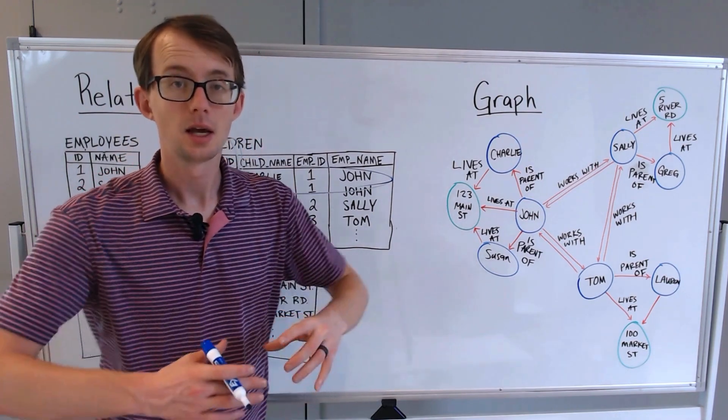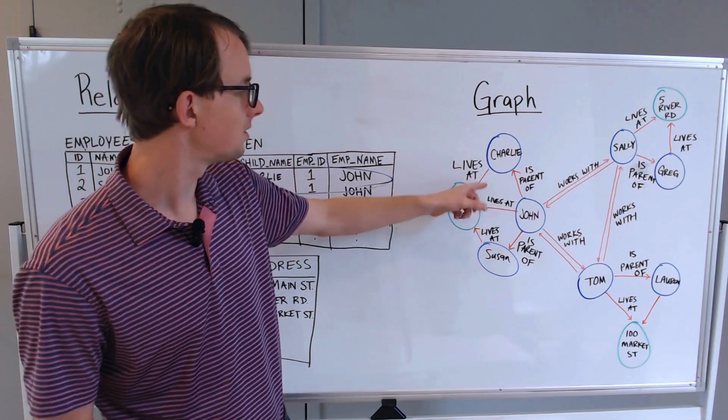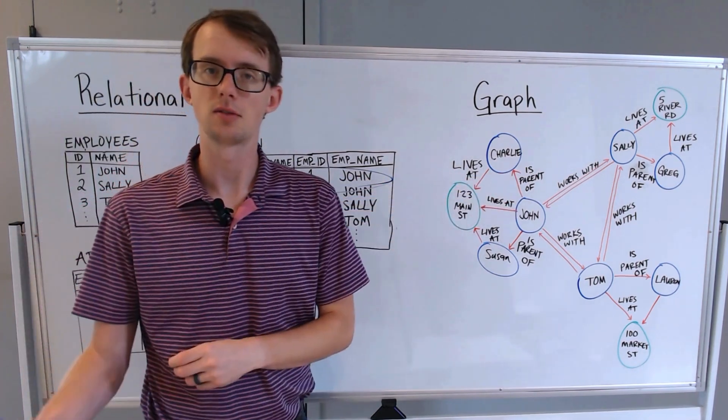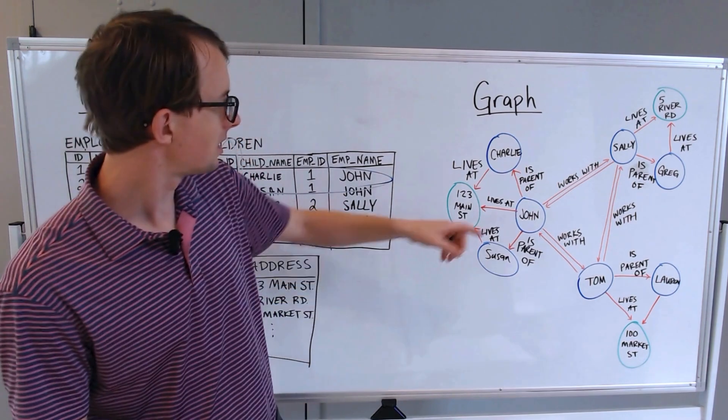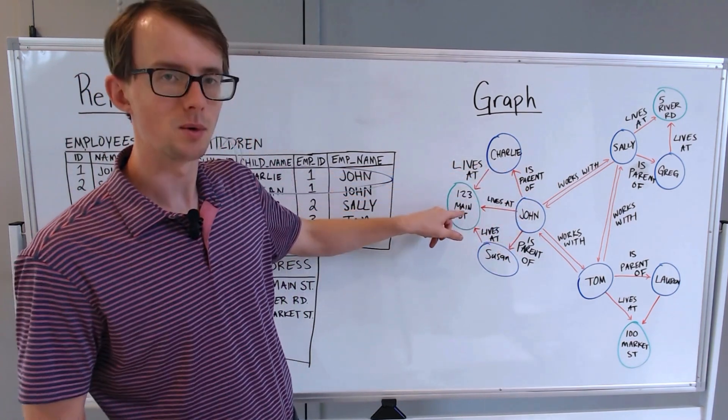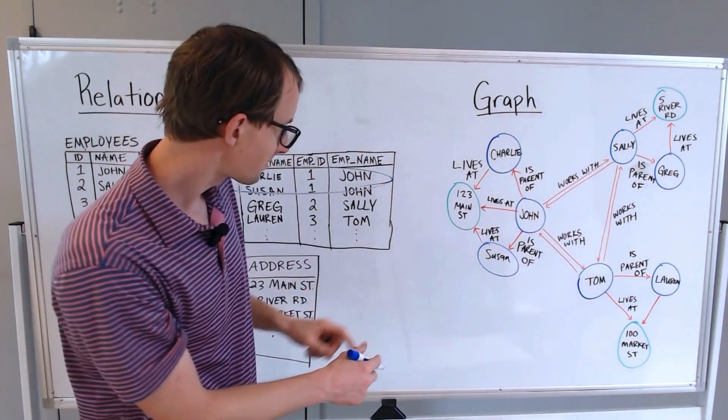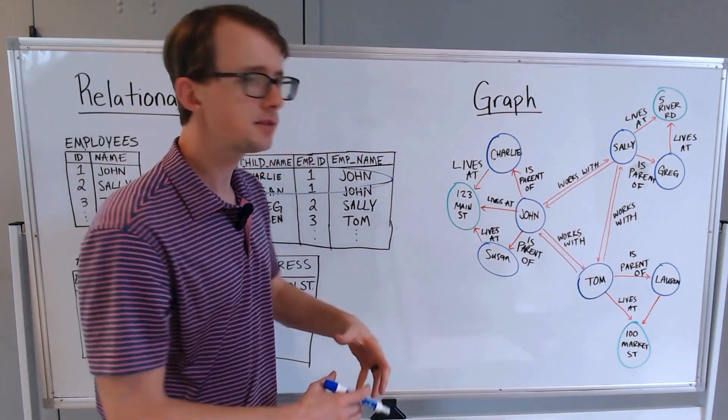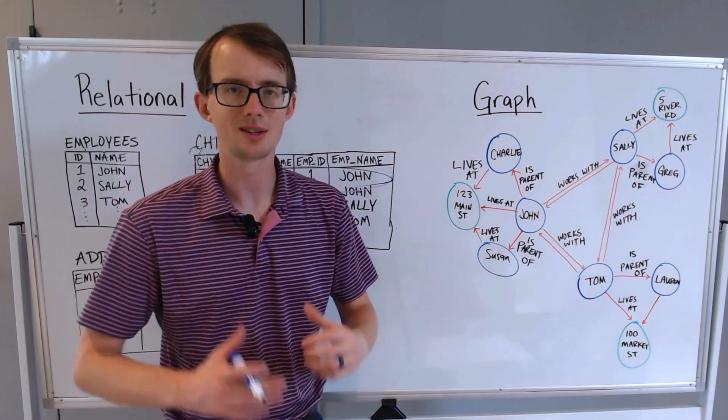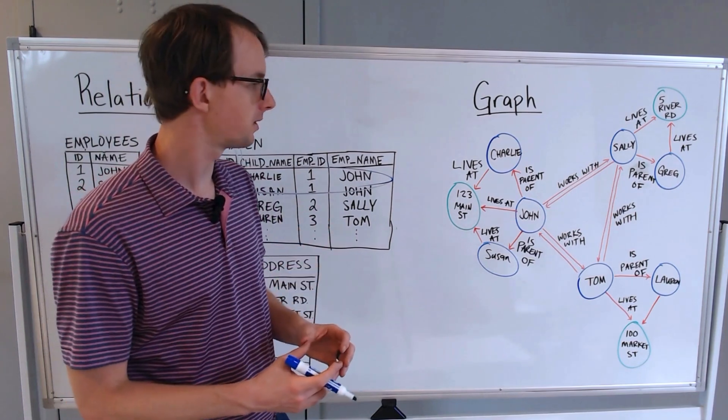How are they connected? They're connected through these lines or these links known as edges. Edges can have strength and direction. We can see that John is the parent of Charlie. John lives at 123 Main Street. And John and Sally both work with one another. This information is much more clear than the relational tables about showing how all of these entities are related to one another.